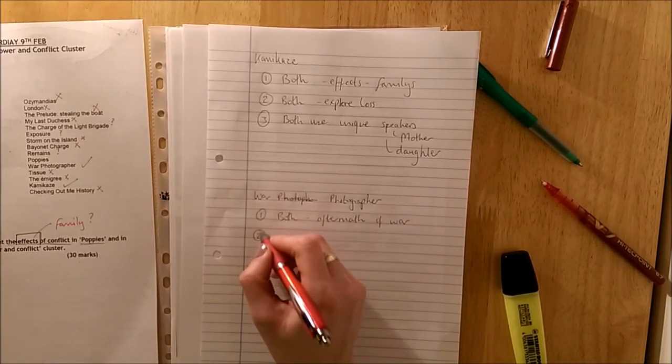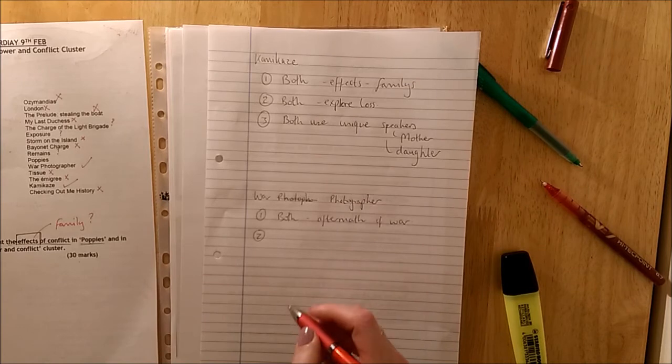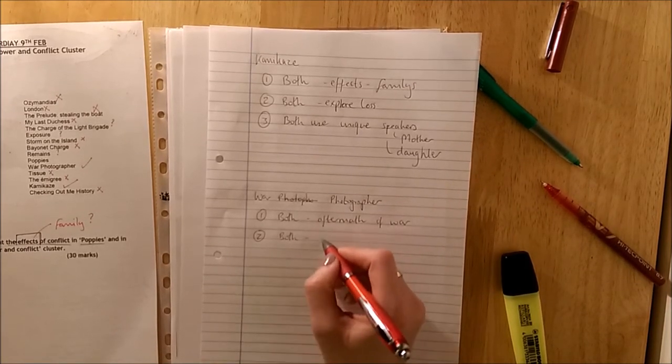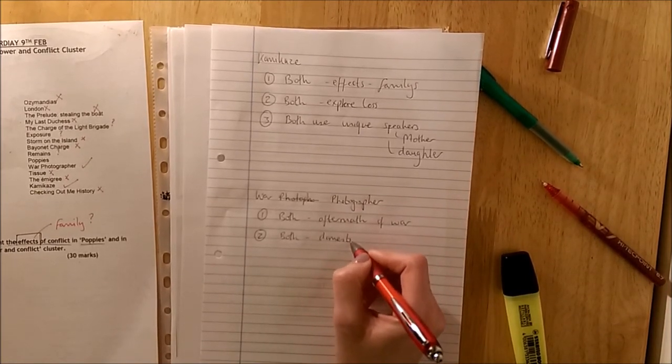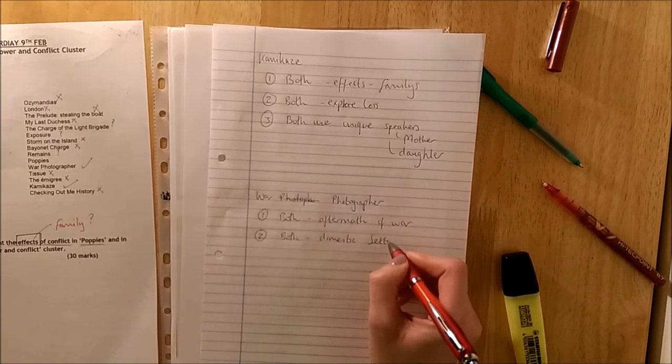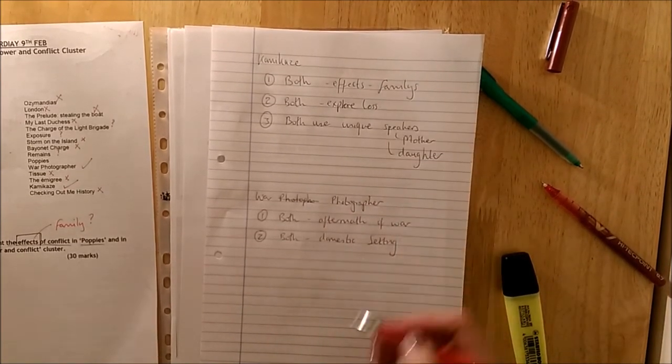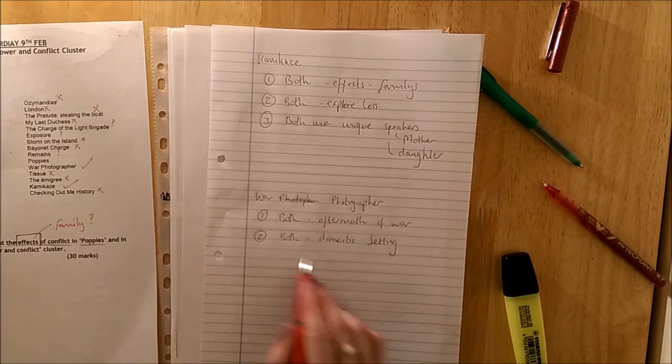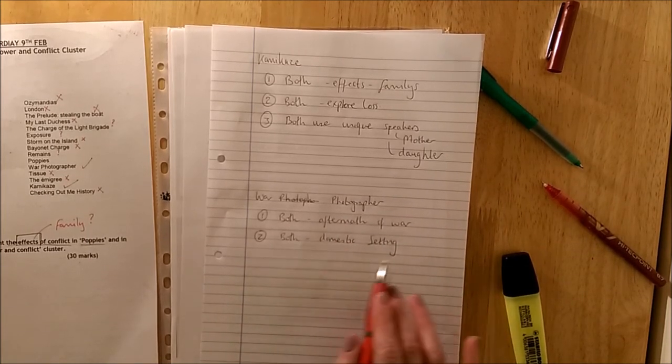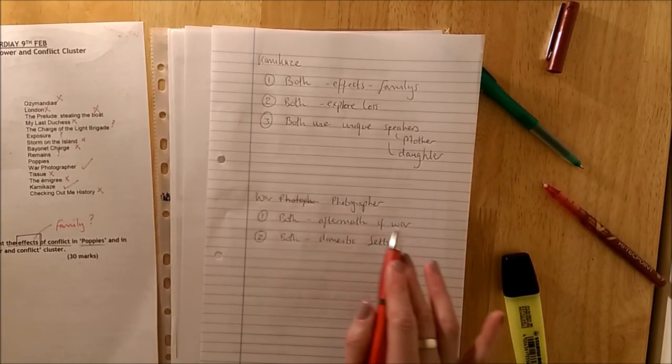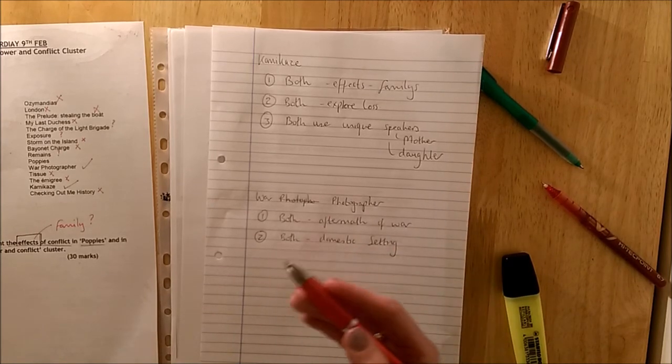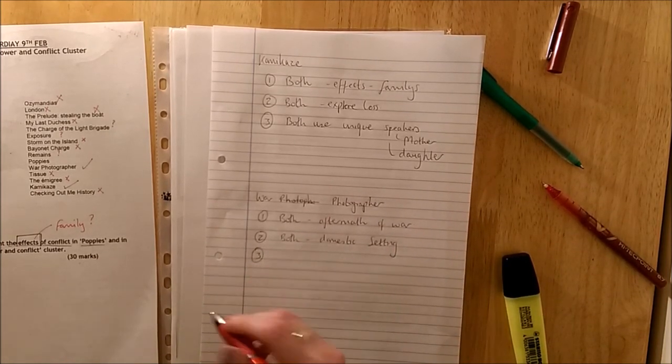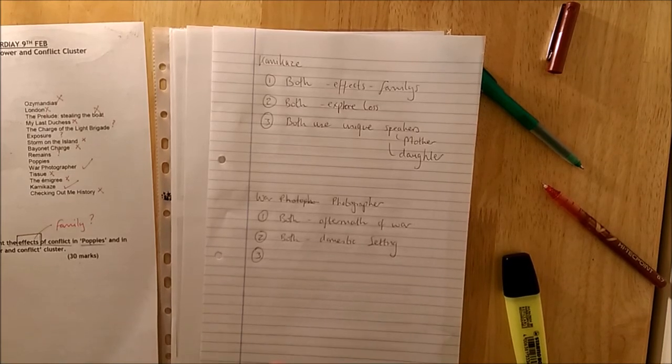You might look at setting. And to be fair you could use it for Kamikaze as well. About the domestic setting. The home. In all three poems. Here you've got the image of the red room developing the photographs. You've also got images of the Sunday newspapers. The broadsheets. Very typically English images.